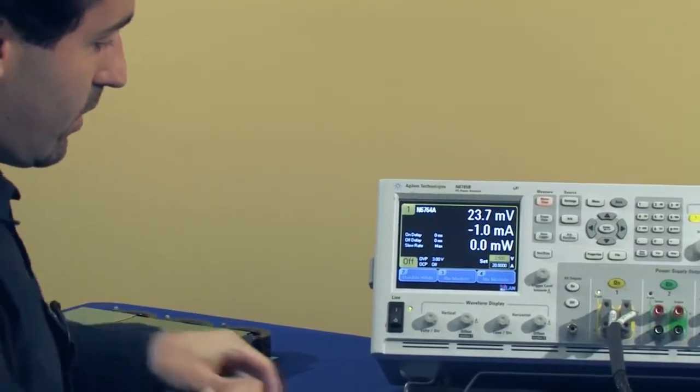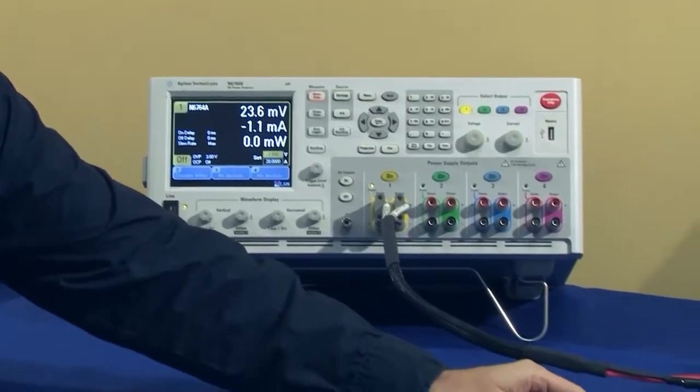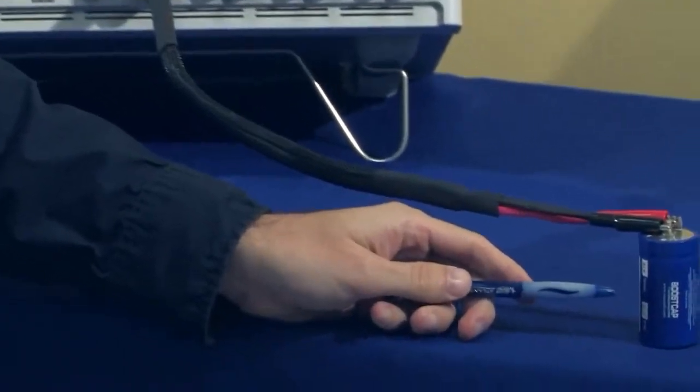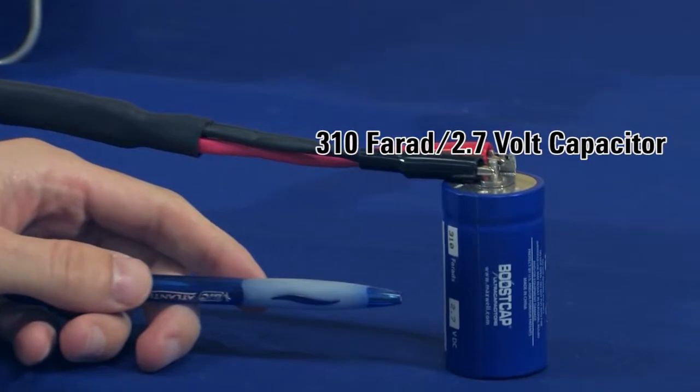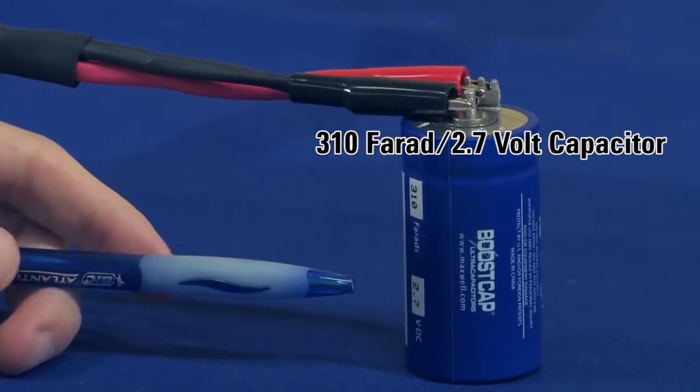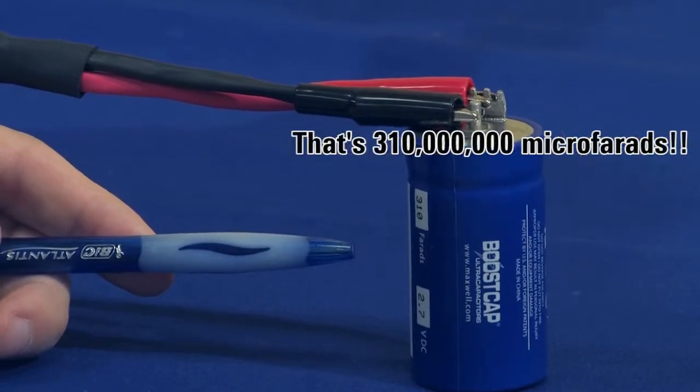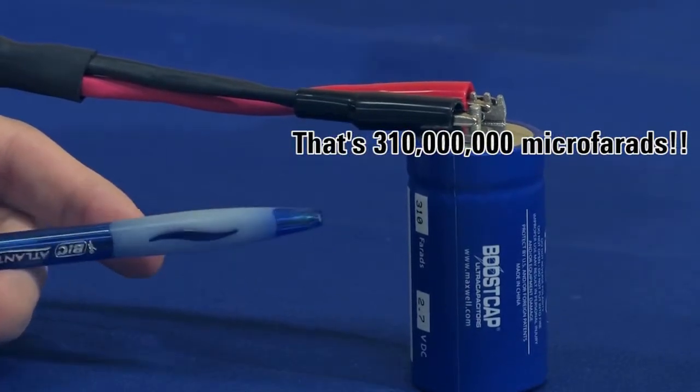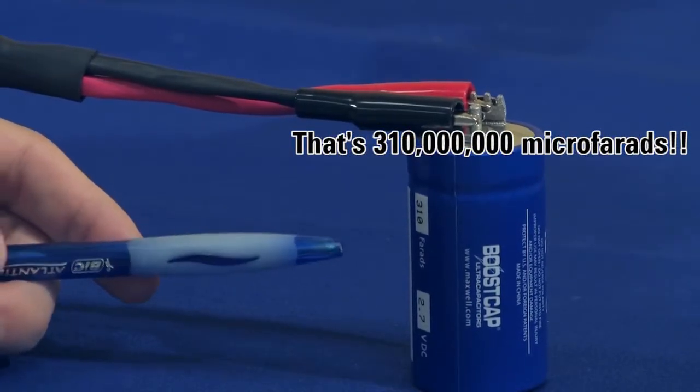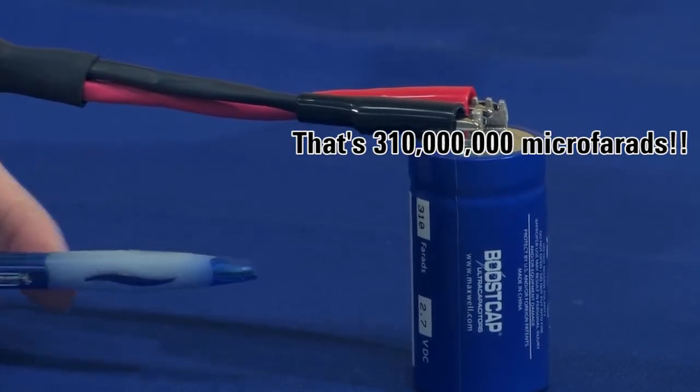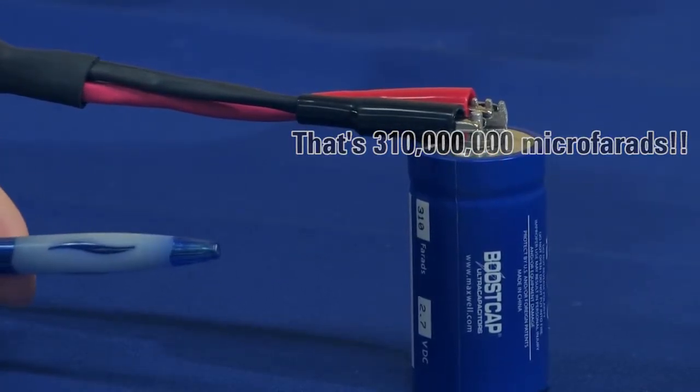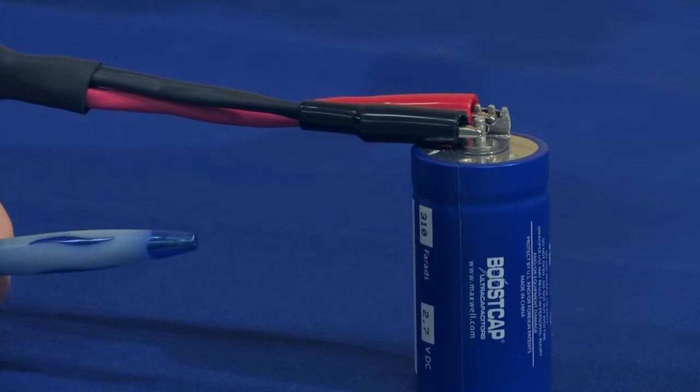Okay, so the device that we're going to charge today is a 310 farad capacitor rated at 2.7 volts. So again, that's 310 farads not microfarads. I know as engineers we're all used to saying microfarads, but this is a very large capacitor, so a lot of energy. You want to be careful when you set something like this up. Make sure you're not shorting any of the leads.